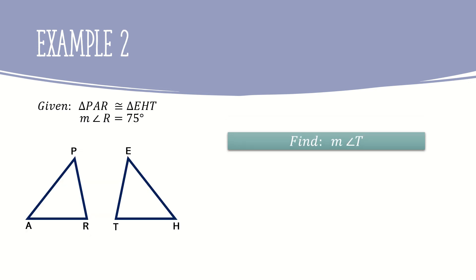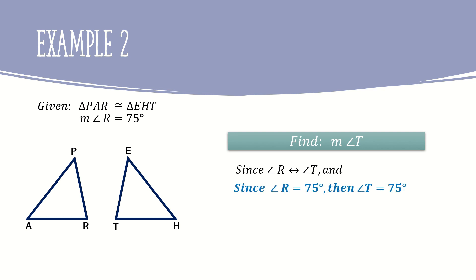In example 2, triangle PAR is congruent to triangle EHT, and the measure of angle R is equal to 75 degrees. We are tasked to identify the measure of angle T. Since we have two congruent triangles, we also have corresponding parts. Angle R corresponds to angle T. Since angle R is 75 degrees, then the measurement of angle T is also 75 degrees.